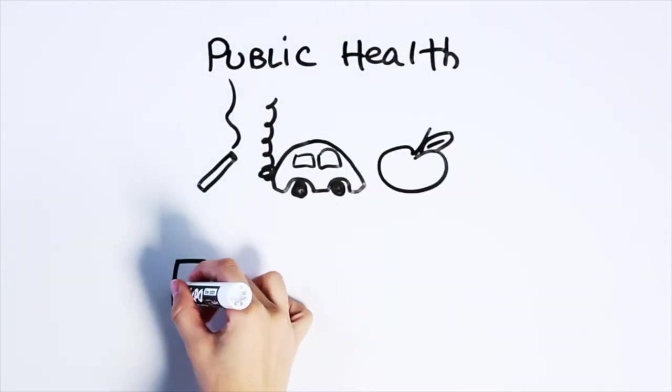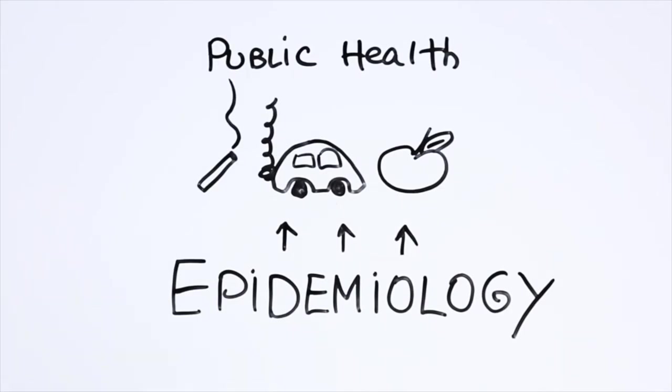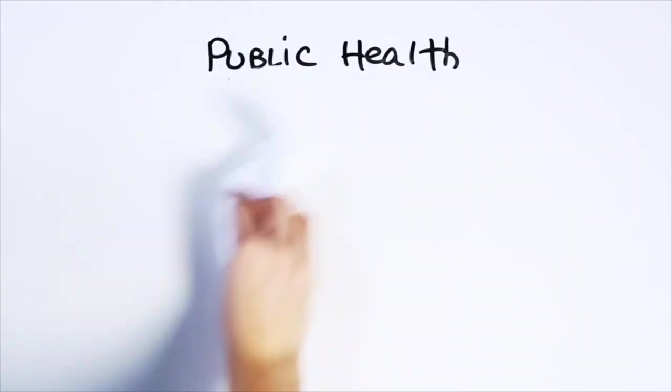These are examples of public health decisions based on epidemiology, the science of understanding how what we're exposed to or what we do may affect the overall health of society. But to make sense of epidemiology, we need to dig a little deeper.